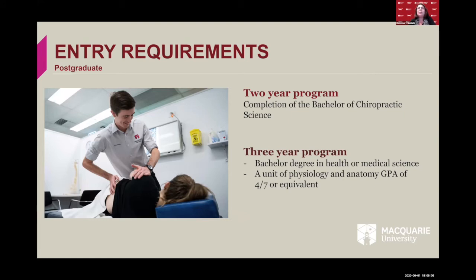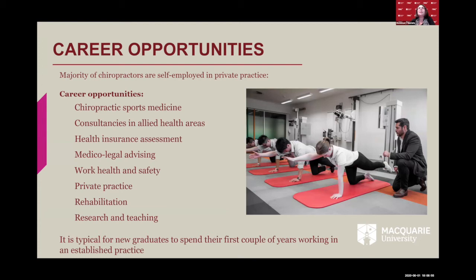There are two avenues of entry into our chiropractic program. The first is completion of the Bachelor of Chiropractic Science, after which students continue on to the two-year Master of Chiropractic degree. The second avenue is for people already holding a degree in health or medical science. If that degree contains sufficient physiology and anatomy and a grade point average of four out of seven or equivalent, they are offered the opportunity to bypass the three-year undergraduate bachelor's degree and instead study a three-year master's program.